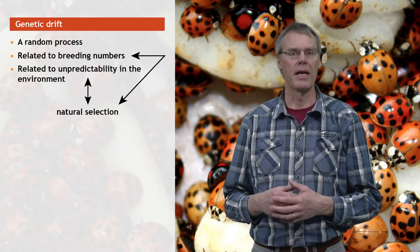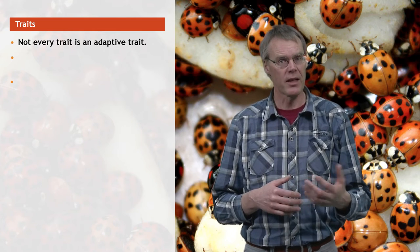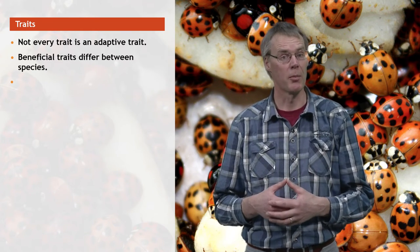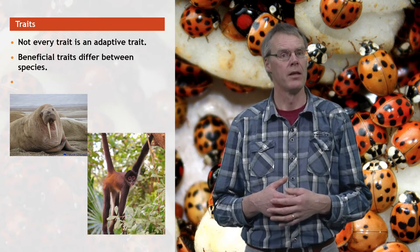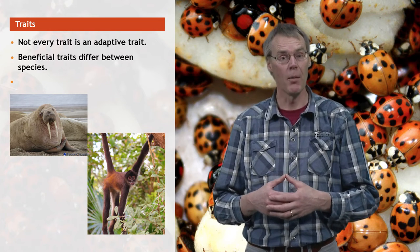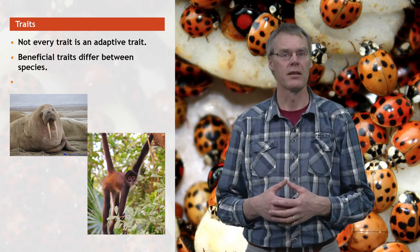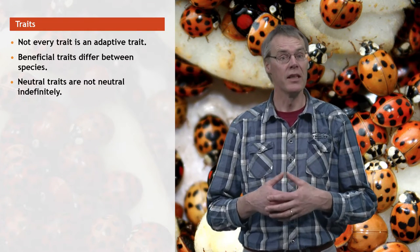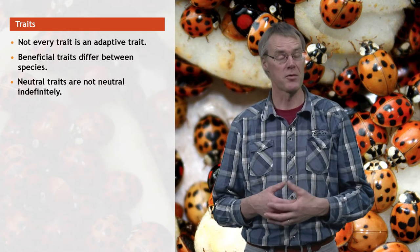Two more comments about traits before moving on to descent with modification and common descent. When it comes to adaptive traits, there is no one-size-fits-all. For example, bulk body size is important in the male walrus to dominate its male rivals, but it would be disadvantageous in males of free-swimming spider monkeys. The second remark is about neutral traits — it is not to say that all neutral variation in traits will be neutral indefinitely. If the environment changes, neutral variant traits can become important for individual fitness and thus become subject to natural selection.